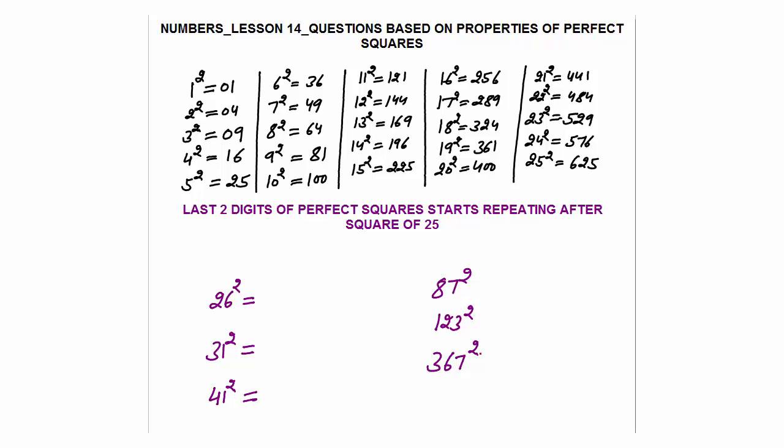Hello, this is Numbers lesson 14. I will discuss questions based on properties of perfect squares. I have written the perfect squares from 1 to 25. The basic concept is that the last two digits of perfect squares start repeating after the square of 25. This means all perfect squares after 25 — whether 27, 29, 115, or any of the infinite perfect squares — their last two digits will be one among the last two digits of squares of 1 to 25.